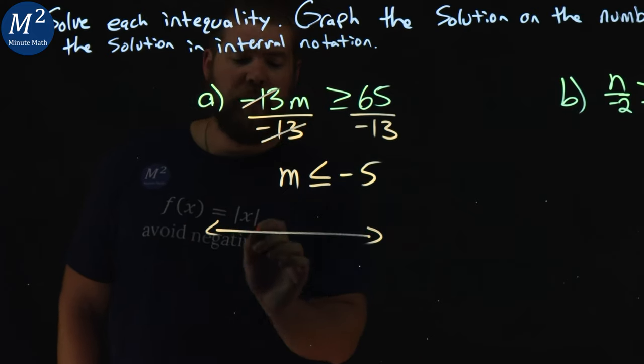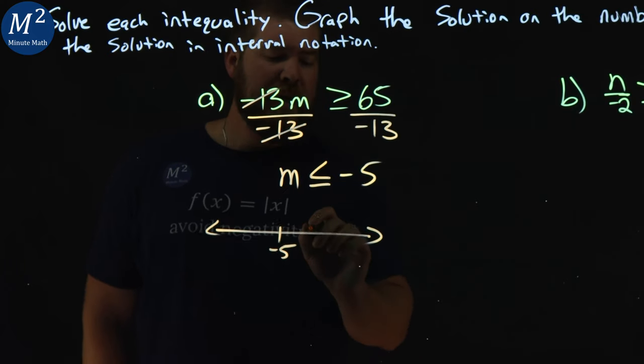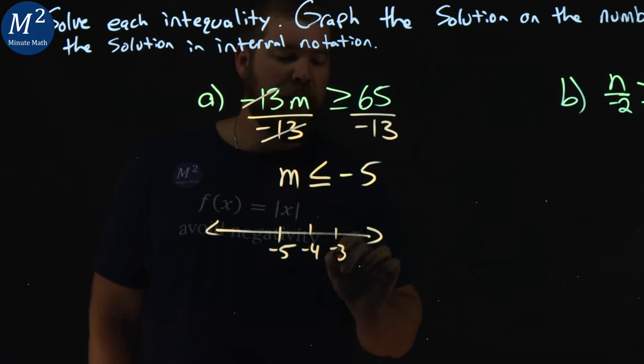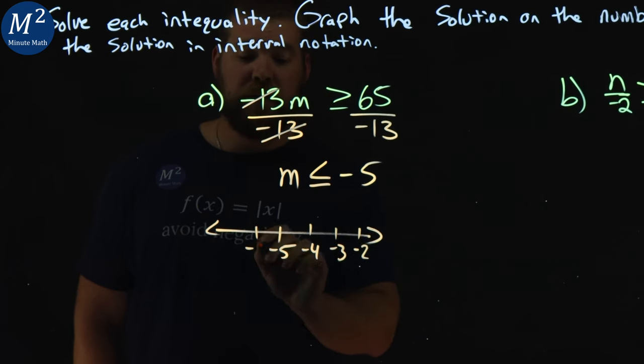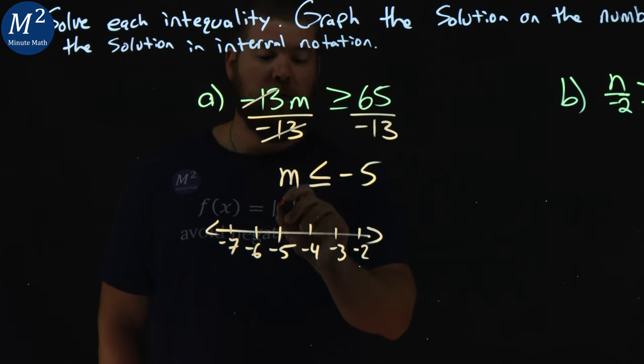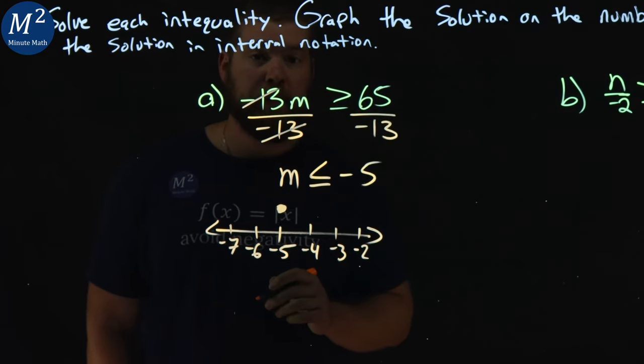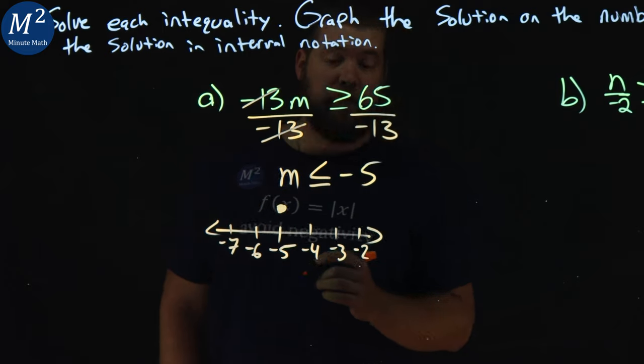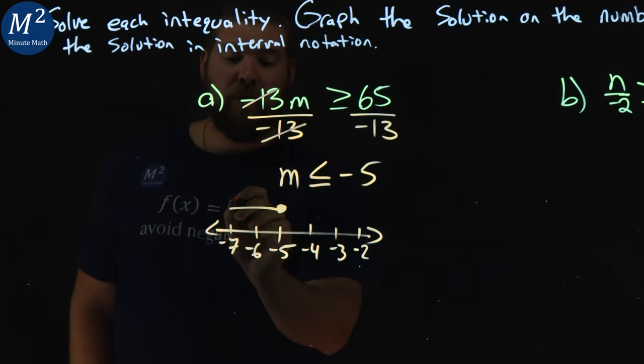We can graph that. Make a number line here. We'll start with negative 5 in the middle and negative 4 to the right, negative 3 and negative 2. To the left, negative 6 and negative 7. m can equal negative 5, so we put a closed circle right there. m is less than negative 5 as well, so we put the arrow to the left.